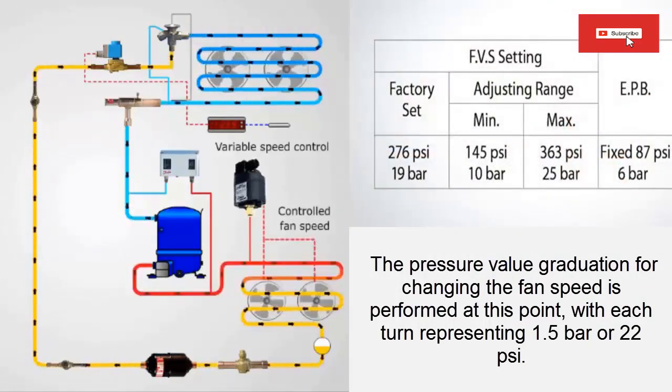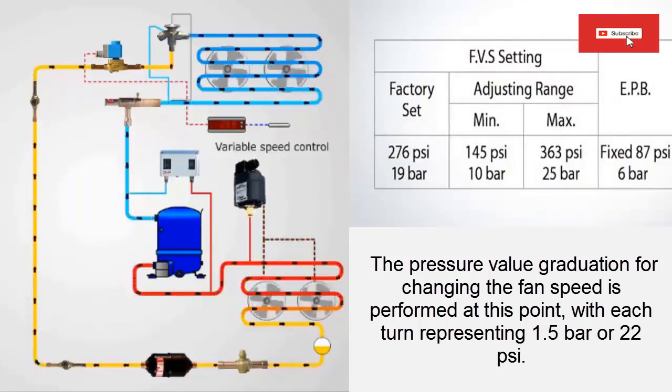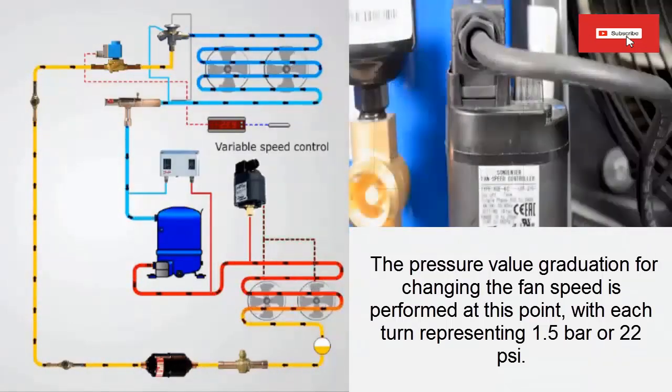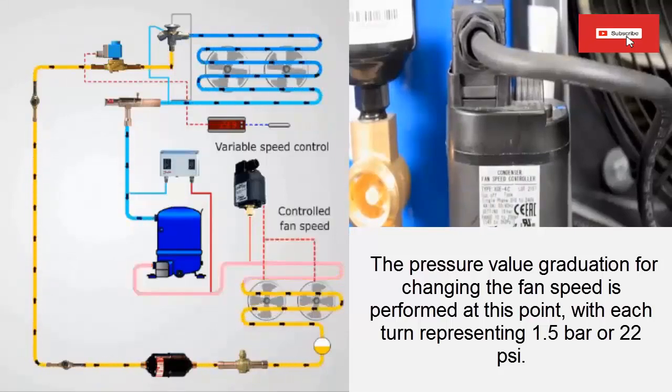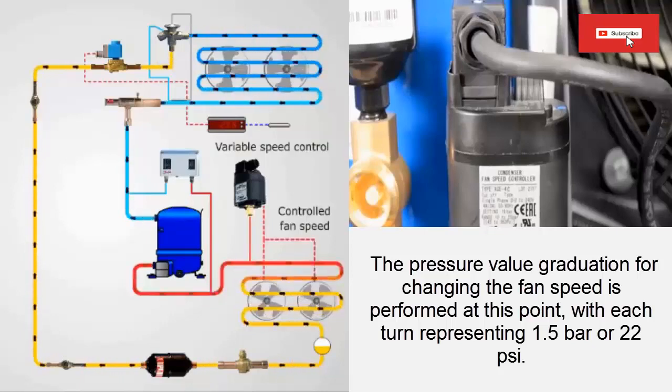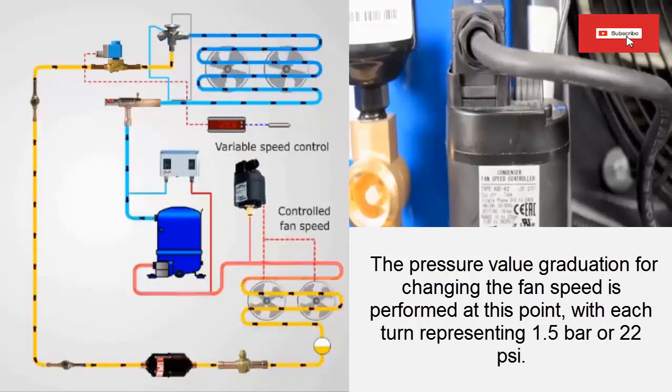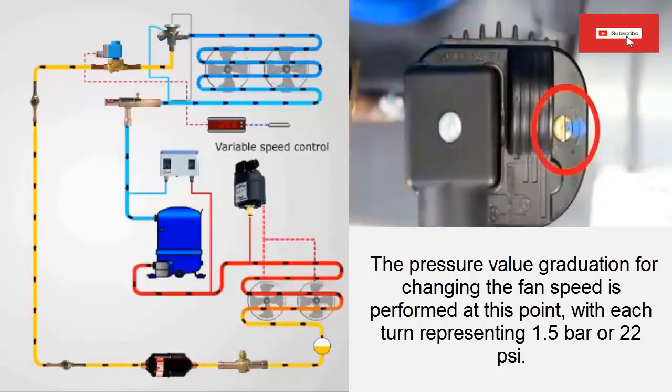2. Electronic Controllers are more sophisticated than pressure actuated controllers. They can use a variety of sensors to monitor the temperature and pressure of the refrigerant, as well as the outside temperature. This allows them to provide more precise control over fan speed.